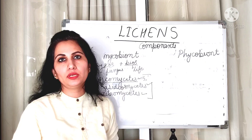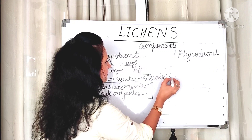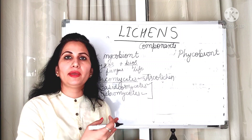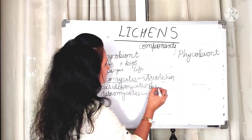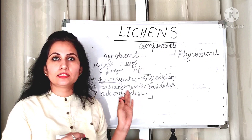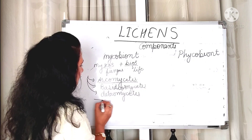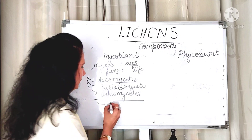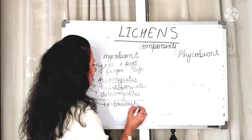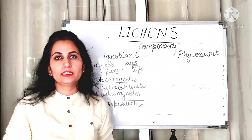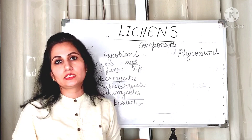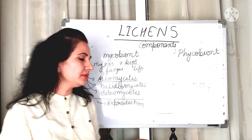If Ascomycetes is present as the mycobiont, that lichen is known as an ascolichen. If Basidiomycetes members are present as the mycobiont, the lichen is known as a basidiolichen. If Deuteromycetes members are the mycobiont, such lichens are known as deuterolichens. The most important function of the mycobiont is reproduction — Ascomycetes members form fruiting bodies known as ascocarps for the reproduction of the lichen.